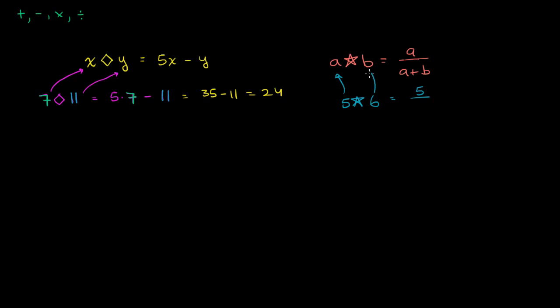So this is going to be equal to 5 over 5 plus 6. a is 5, b is 6, over 5 plus 6. So this would be 5 elevenths.